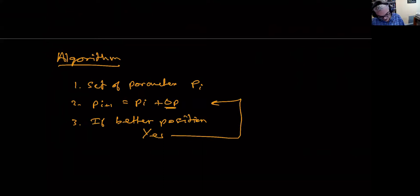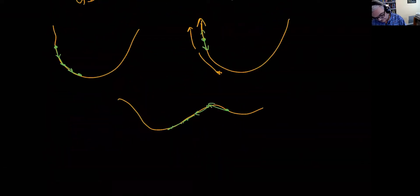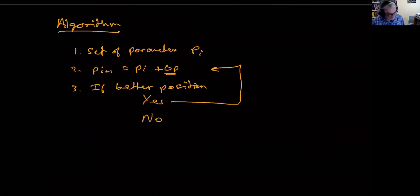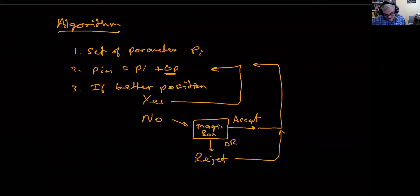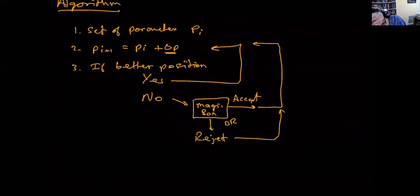So what happens if we're in a worse position? We've moved up rather than down. So no, we're in a worse position. Then what happens is we go into what I'll just call for the moment a magic box. And two things, one of two things can happen with this magic box. The magic box either says accept, even though it's a worse position, accept and go around again, or the magic box says no, no, no, reject. I don't want to use this new parameter set pi plus one. Reject, try again. So that's basically the essential algorithm.